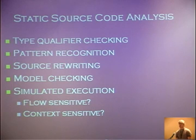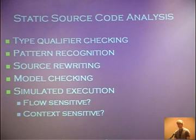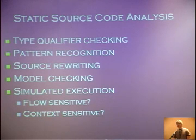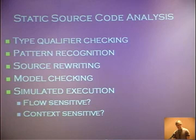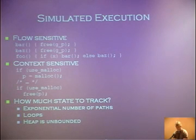Source rewriting is a variant where you take source code in one form and apply some transformation so that you get another program which is equivalent but has some added property — such as bounds checks for all pointer accesses. Model checking is kind of static, kind of dynamic depending on implementation: you take a program, build up a model like a state machine, and start driving it to see what falls out. Done entirely statically, this is essentially simulated execution — like running a C interpreter over your source code.